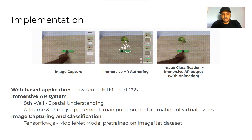Teachable Reality is a web-based AR system that runs on any browser supporting the WebXR platform. It is developed using JavaScript, HTML, and CSS, and runs entirely on the client side of the browser. The system uses 8th Wall, A-Frame, and Three.js for the immersive AR authoring system. A-Frame enables placement, manipulation, and animation of virtual assets, while 8th Wall provides spatial understanding including surface detection and device position tracking. For training and live testing, we leverage transfer learning using TensorFlow.js, leveraging the MobileNet model pre-trained on the ImageNet dataset to reduce training time.